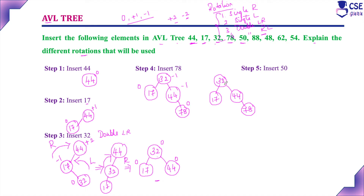Insert element 50. Since 50 is greater than 32, go right to 44; greater than 44, go right to 78; less than 78, so attach as left child of 78. Check balance factors: leaf nodes are 0; node 44 has balance factor 0 minus 2 = -2; node 32 has balance factor 1 minus 3 = -2. The tree is unbalanced — we must perform a rotation.